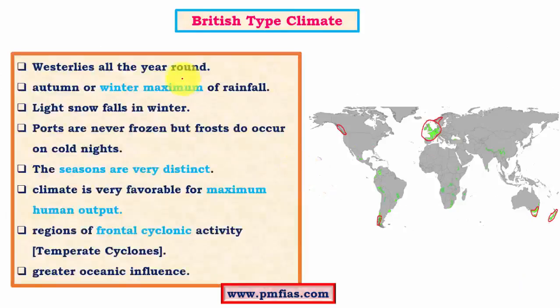These regions are under the influence of westerlies all around the year, and this is a very important feature because this characteristic is the reason behind the year-long rainfall in the region. During summers, convectional rainfall occurs, whereas in winters most of the rainfall occurs due to frontal or temperate cyclones. As this climate is under the influence of westerlies all year round, it receives good amounts of rainfall from temperate cyclones, resulting in a winter maximum of rainfall.